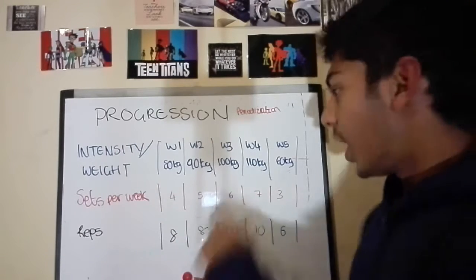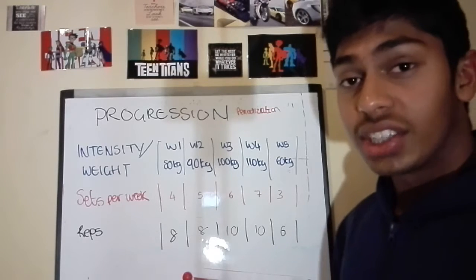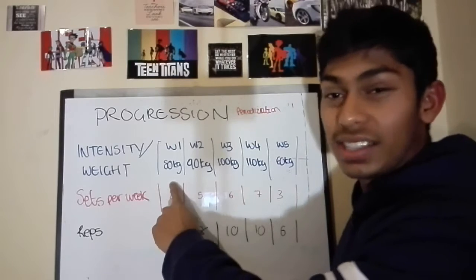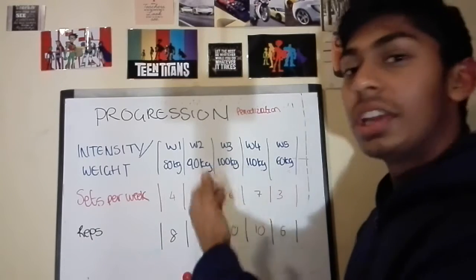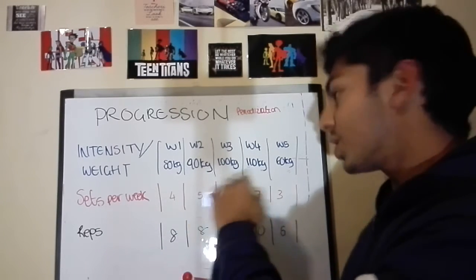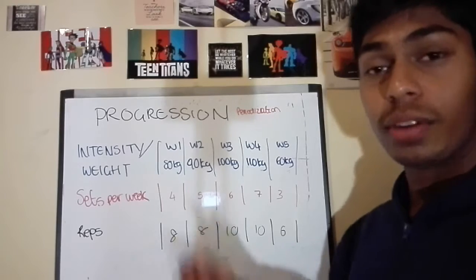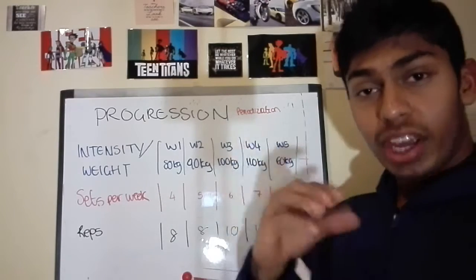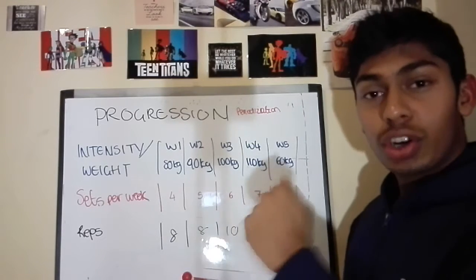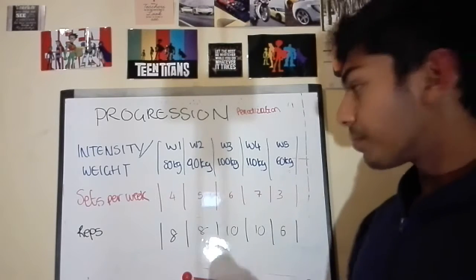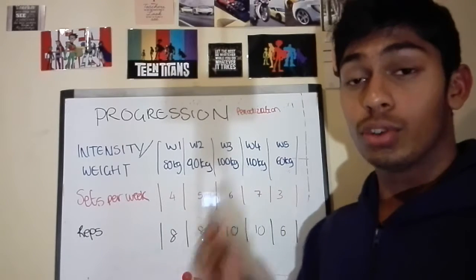As we increase the weight, we go closer and closer to failure. On the deload week at 80 kilograms, the intensity we'd be going to failure with is not that big. But when we've progressed and our body has been adapting to the weight continually on a weekly basis, we can go to about 110 kilograms and go to failure — 30 kilograms heavier than what we could have failed on in the first week. When programming, you need to create programs that increase weight so you start going to failure with loads that are quite heavy.